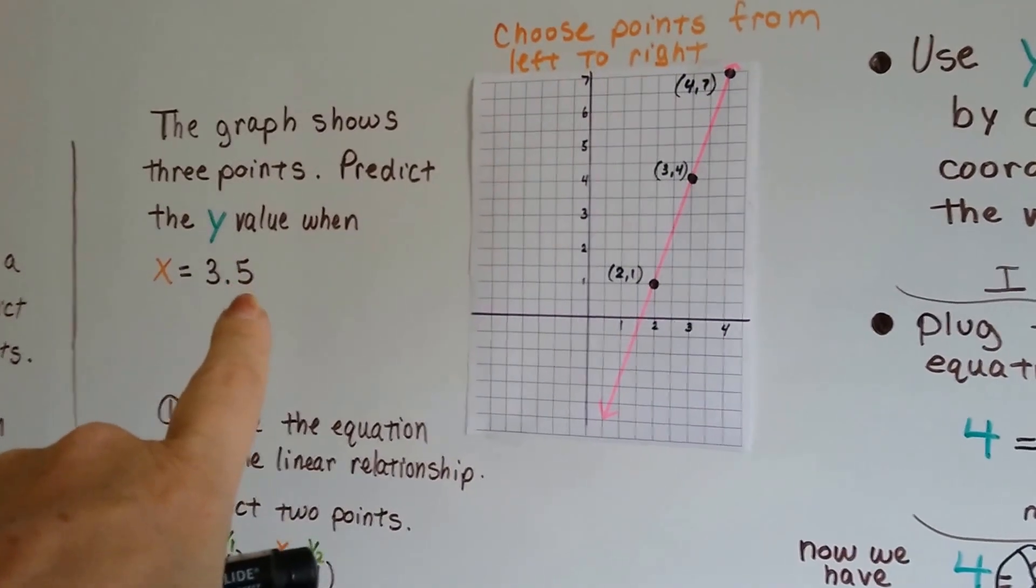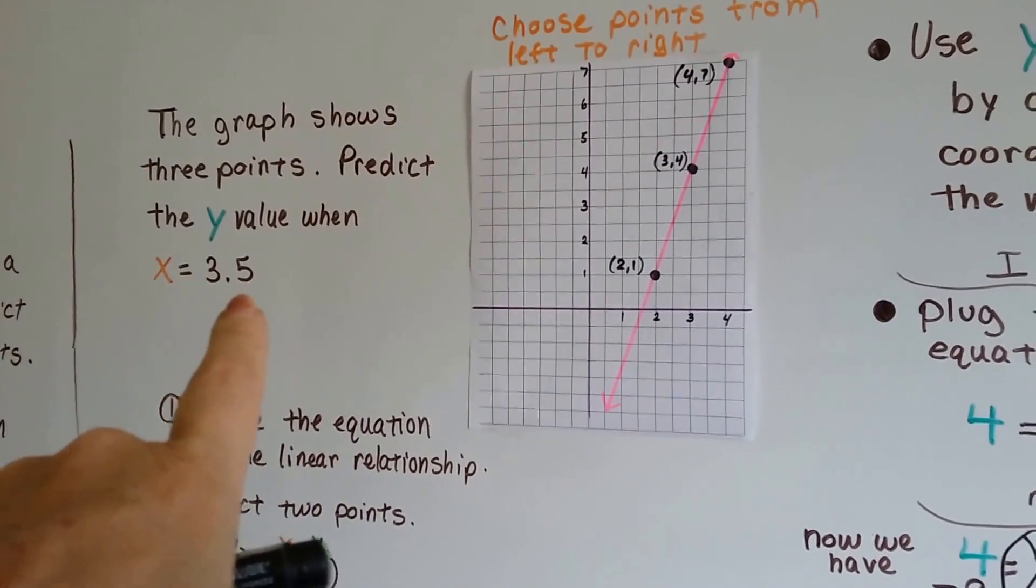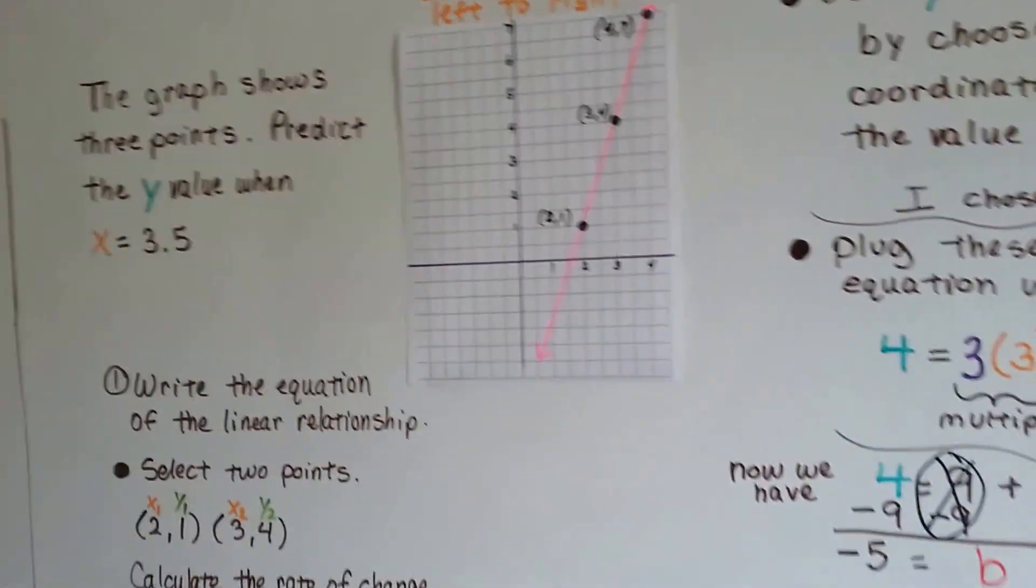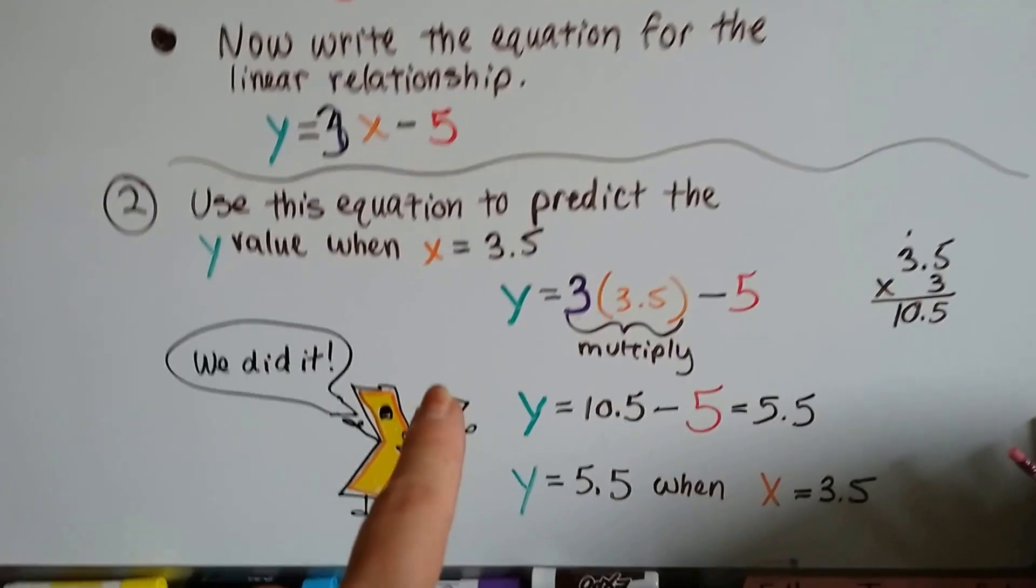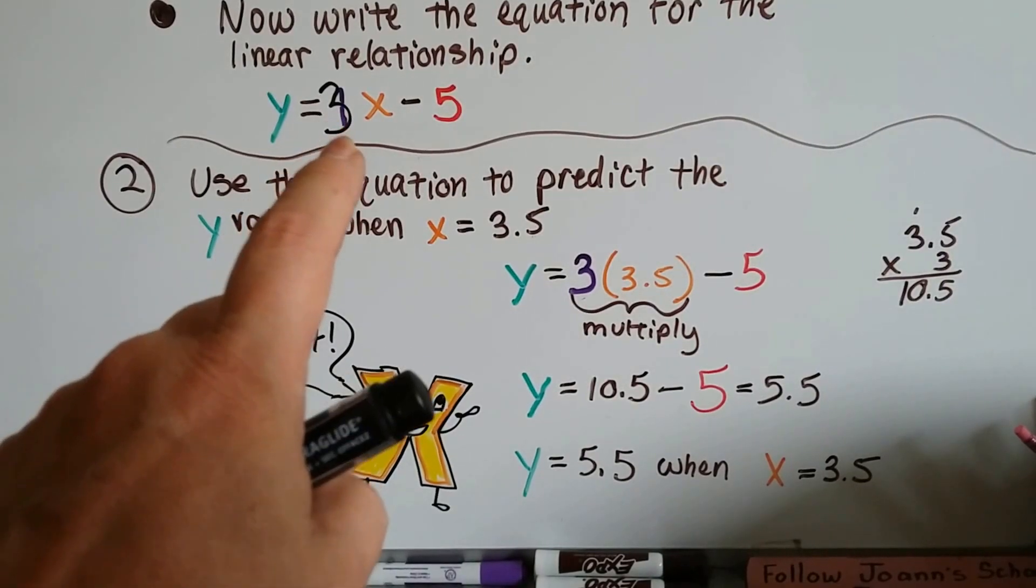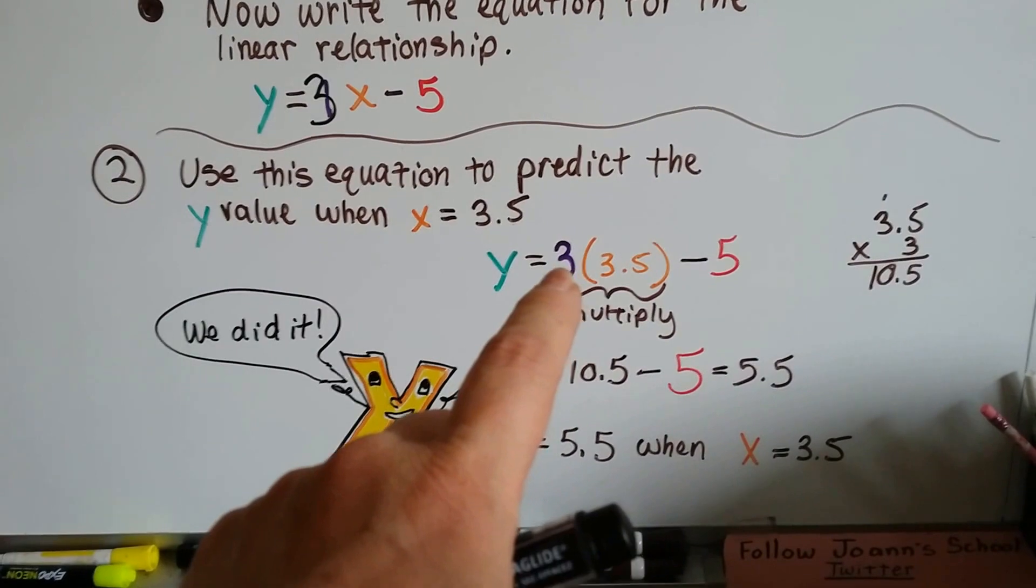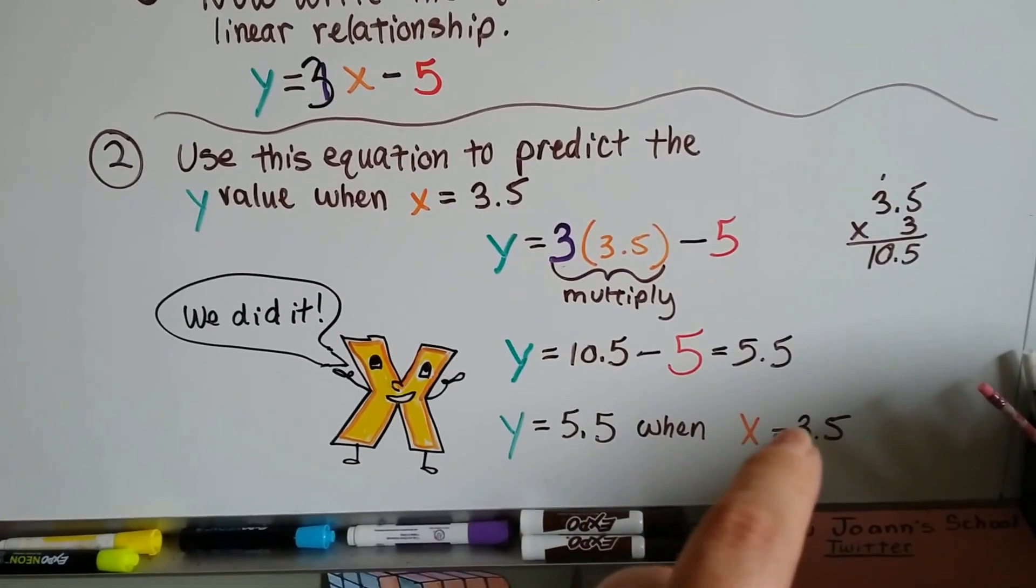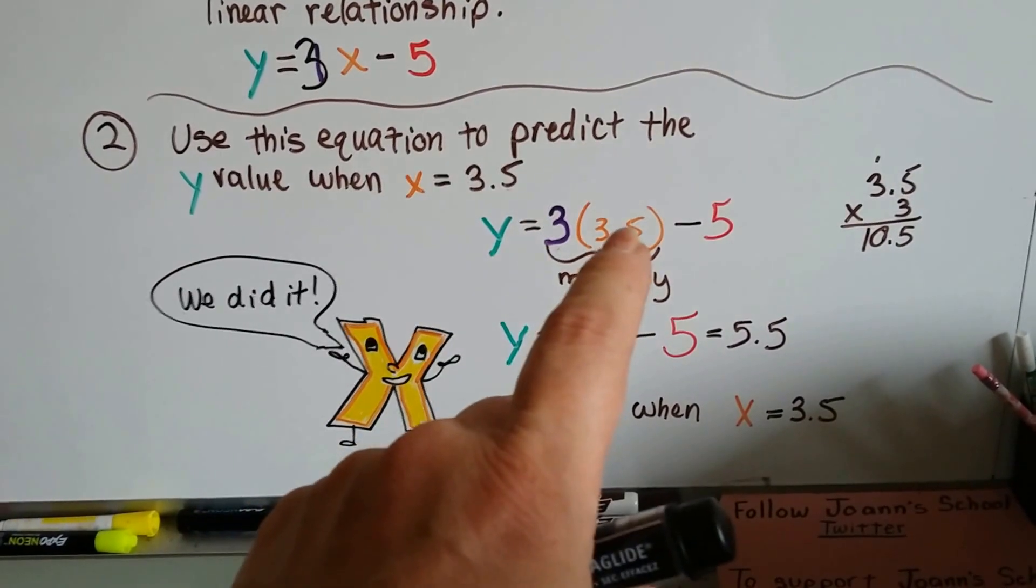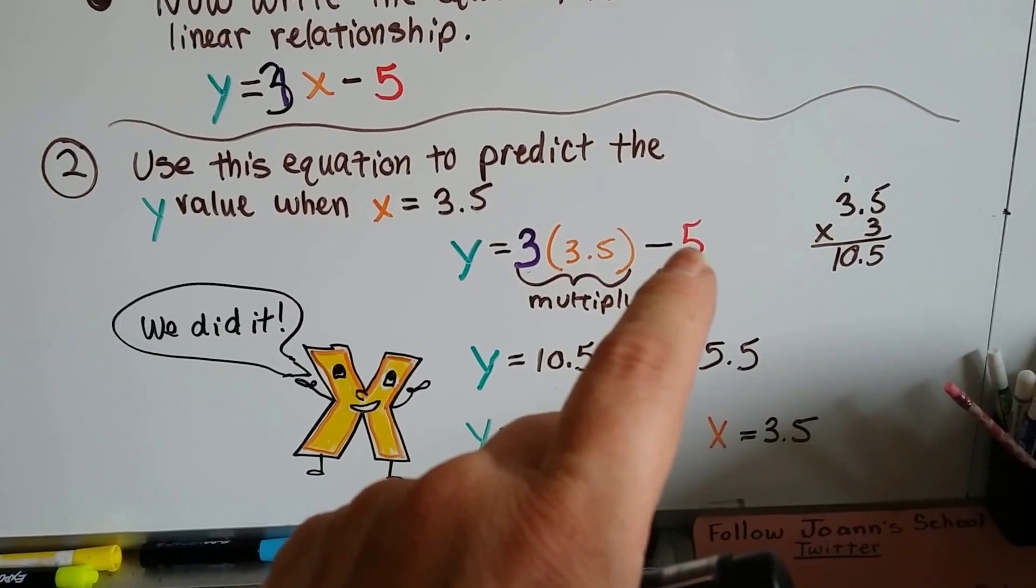Remember, that was the first thing that asked us to do. Predict the y value when x equals 3.5. So it's going to be in between this point and that point. So what we do is, we say, okay, we know our slope is 3. So we plug that in here. And we're looking for x to equal 3.5. So we put that there for x. We know our b is a negative 5. So that goes there.